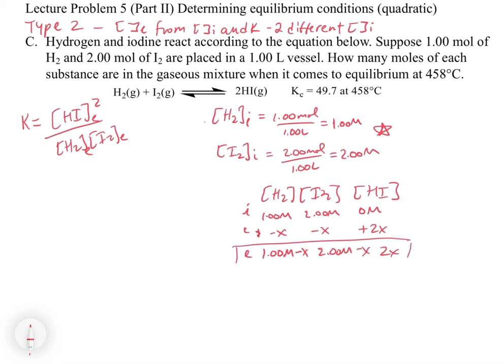So at this stage all of the setup has been the same, and we're going to do the exact same thing. We're going to take those and we're going to plug them into our K expression. So this is going to be 49.7 is equal to 2x squared. And then on the bottom we have 1.00 molar minus x, and we have 2.00 molar minus x.